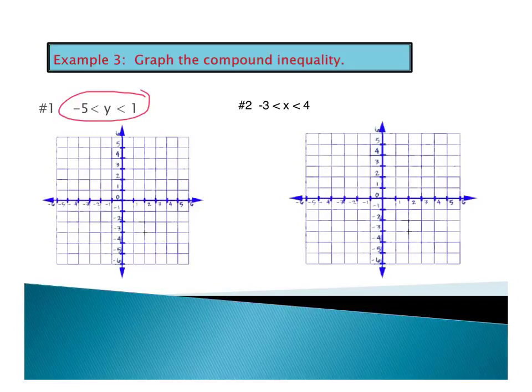We're going to use a dashed line because of the inequality. One of them will be going through positive 1, and it's horizontal. The other one goes through negative 5, and it's also horizontal.